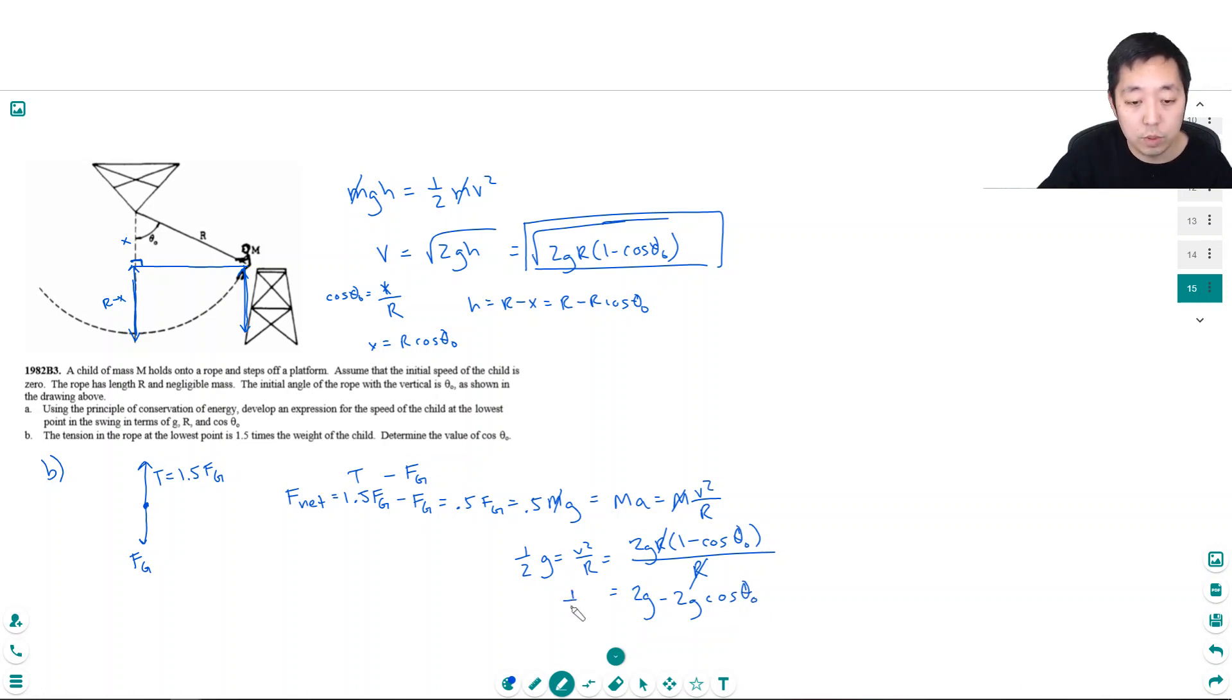The G's can cancel, and this is equal to 1.5 G. The G's are going to cancel also. So I have cosine of theta not is equal to, bring this over here, 2 minus 1.5 is, 2 cosine would be equal to... 2 is 4 over 2, 3 halves. So then cosine theta not would equal 3 fourths.